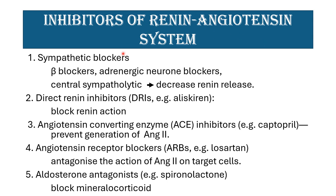Inhibitors of the renin angiotensin system act on various steps. First are sympathetic blockers like beta blockers and adrenergic neural blockers, and centrally sympatholytic agents like clonidine, which decrease renin release. Second are direct renin inhibitors like aliskiren. Third are ACE inhibitors like captopril and enalapril, which prevent generation of angiotensin 2. Fourth are angiotensin receptor blockers like losartan, candesartan, and irbesartan. Last are aldosterone antagonists like spironolactone.